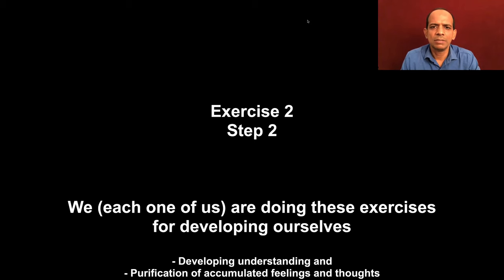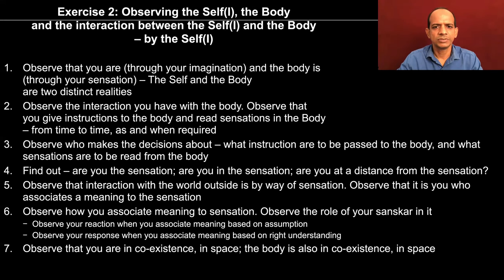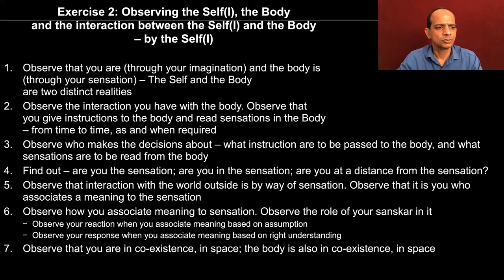In this process, we are able to develop our right understanding and we are also able to purify our sanskar — our accumulated assumptions and acceptances. So we can have a look at all the seven steps that we are going to go through in this exercise. We have discussed step 1, and we had seen that in step 1 we are able to observe the two realities: that you are there through your imagination and the body is there through your sensation, and the self and the body are two distinct realities.